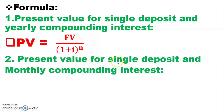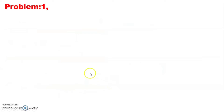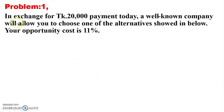Formula number two: present value for single deposit with monthly compounding interest. Here PV equals FV divided by (1 plus i divided by m) to the power n times m. The extra element here is m, where m means the number of compounding periods in a year.